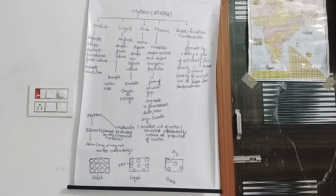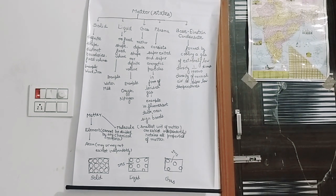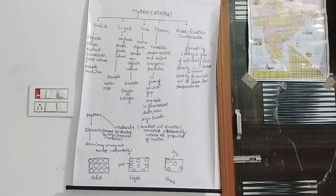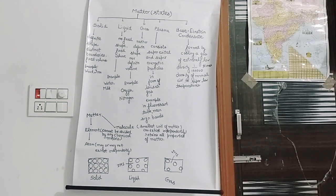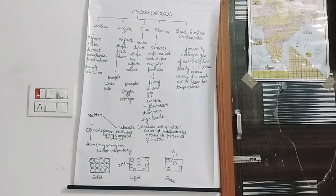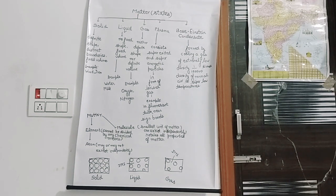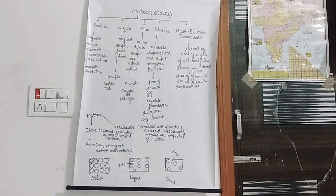The last state is Bose-Einstein condensate, named after two scientists: Satyendranath Bose and Albert Einstein. It is formed when a gas with very low density — about 1/100,000 times the density of normal air — is cooled to super low temperatures. Then this Bose-Einstein condensate is formed.